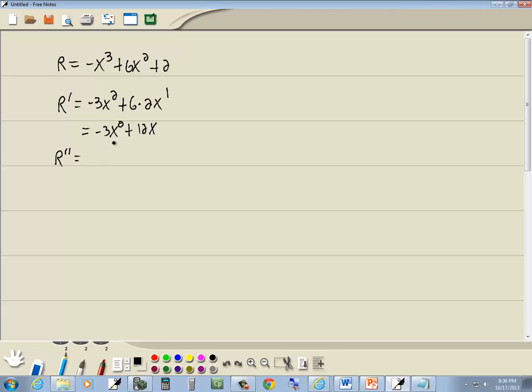Now for our second derivative, we'll take the derivative of what we just found. So negative 3 stays out in front, the derivative of x squared, take your power, put it out in front, lower it by 1, and 12x just becomes 12. So that gives us negative 6x plus 12.